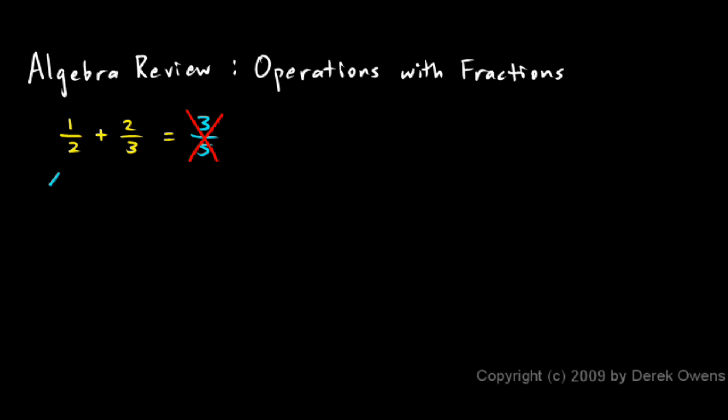You can only add these fractions if you have a common denominator. And right here I don't. I have a 2 and a 3, two different denominators. I need the same denominator. And here's why we have to have common denominators.